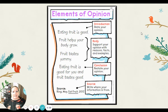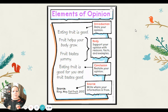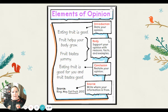One thing we'd like to take a look at first is our elements of opinion. When we are writing our opinions, how we feel in our heart, here are some things that we are going to be making sure to include in our writing. First up is an introduction — this is where you state your opinion. Then the body, which is where you support your opinion with reasons, maybe some facts and examples.